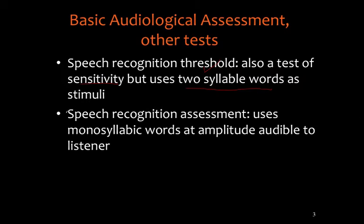There is a second type of speech recognition test using monosyllabic words. The distinction here is that the amplitude is set at a level at which the words are audible to the listener, and then it's a test of understanding. Speech recognition threshold is measured in decibels, while speech recognition with monosyllabic words — sometimes called speech discrimination, though that's not psychometrically correct — generates a percent correct score, where 100% would be a perfect score. This test is used to address the person's word understanding ability.